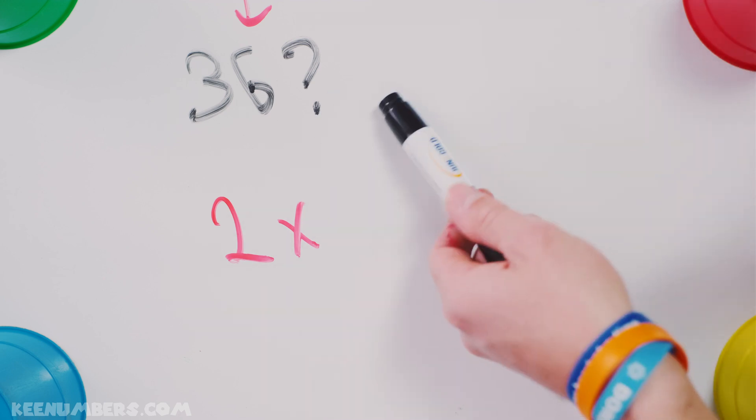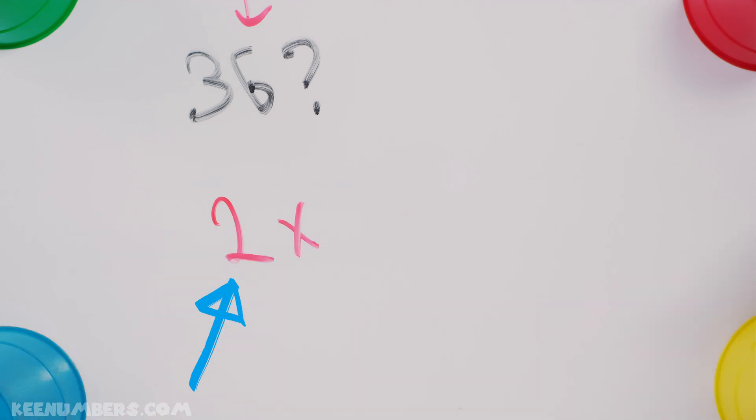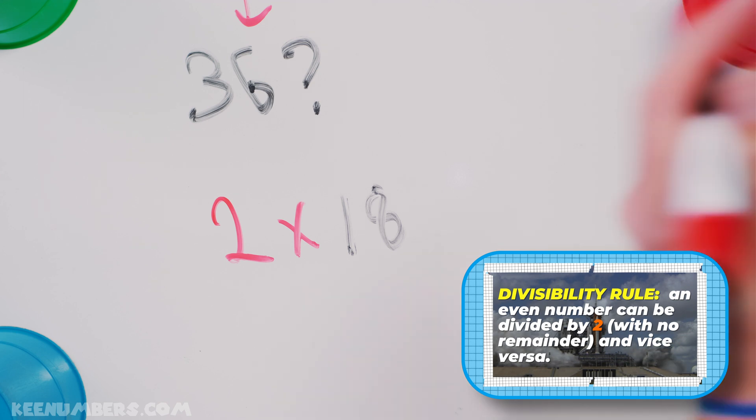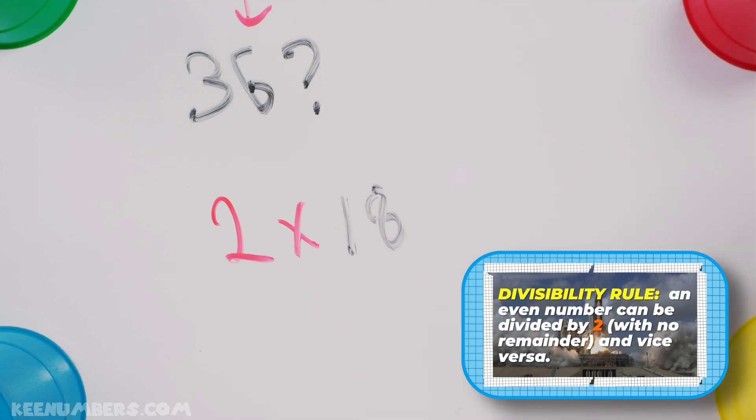And what about, is it divisible by 3? Well, we'll get to that in a second. How many 2's are in 36? Yes. There are 18 2's in 36. So that's good to go.